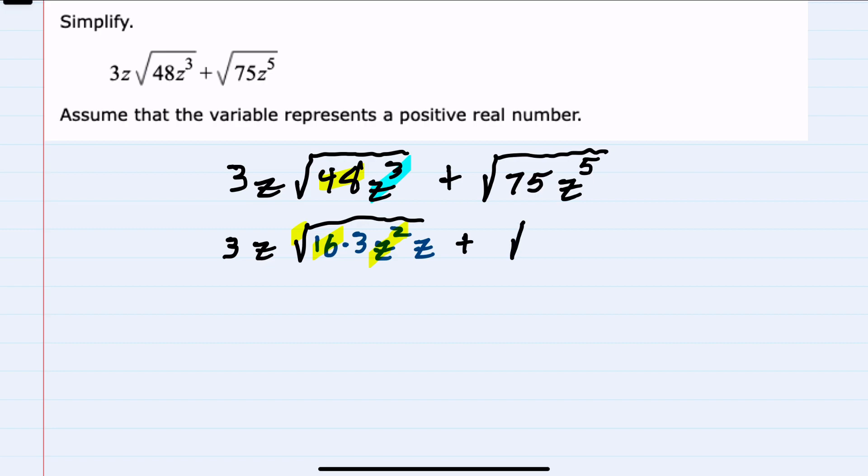For the second radical, for the numerical part 75, I can rewrite that as 25 times 3. Again, because 25 is a perfect square, I can bring it out in our next step. And the z⁵, I'll rewrite as z⁴ times z, because z⁴ has a degree that's a multiple of 2, so I'll be able to bring it out of the radical as well.